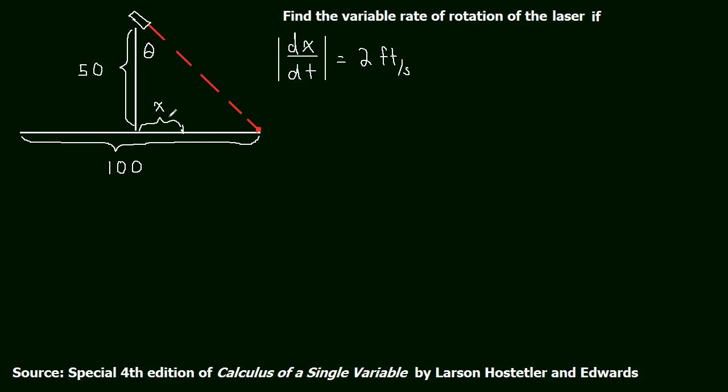And we know that that x is related to theta through the tangent function. Let me show you what I mean. If I draw this down to our arbitrary x, I still have a right triangle. And here is my theta. And tangent is opposite over adjacent. And we know what the adjacent is. The height of this camera is 50 feet off the ground.